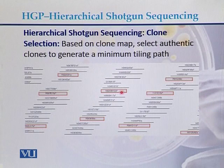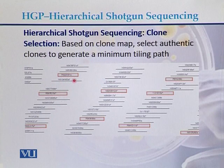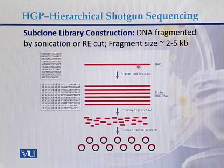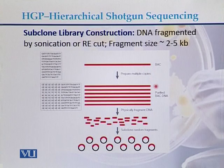Based on the clone map, authenticated clones were selected to generate a minimum tiling path, since these represent all clones. From all these clones, certain clones were selected for sequencing by shotgun sequencing. This is the BAC — the larger fragment — because initially the human genome was inserted into bacterial artificial chromosomes. This BAC was again digested and the smaller fragments were cloned into plasmid vectors.